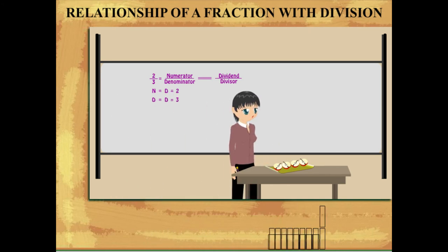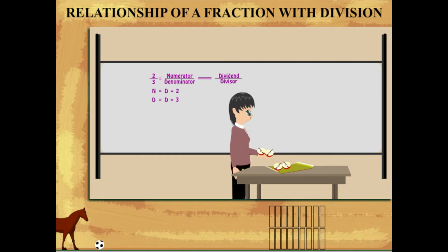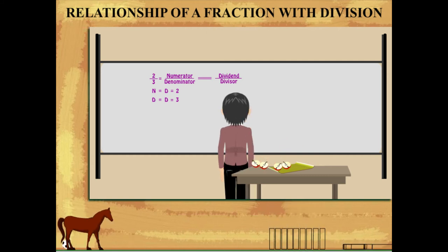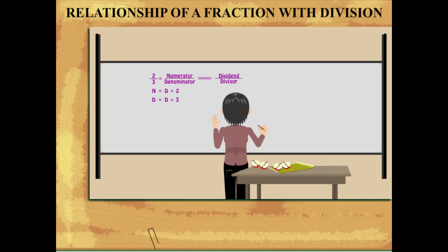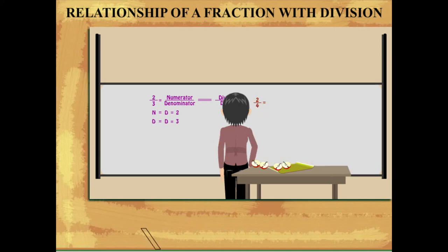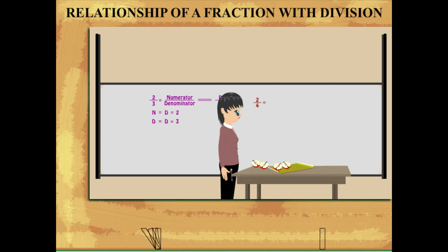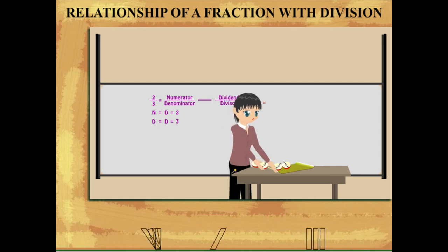She picks out 2 pieces and places them out of the tray. She writes the fraction 2 upon 4 for the selected apple pieces. Now she joins the pieces to show 4 pieces make 2 apples.